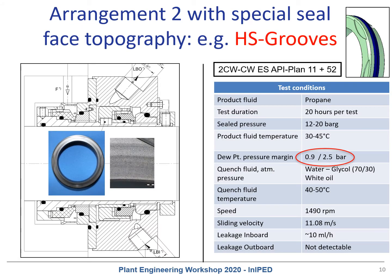Low vapor pressure margins may result in a dry running risk. In order to generate a more stable lubrication film and provide additional cooling, seal faces are modified by different face topography. A typical example is a dual seal in tandem arrangement in combination with piping plan 11 and 52, running in propane at low vapor pressure margins of 0.9 or 2.5 bar. In this case, the face topography used is called HS grooves — hydrodynamic grooves machined in one sliding face to improve liquid lubrication.